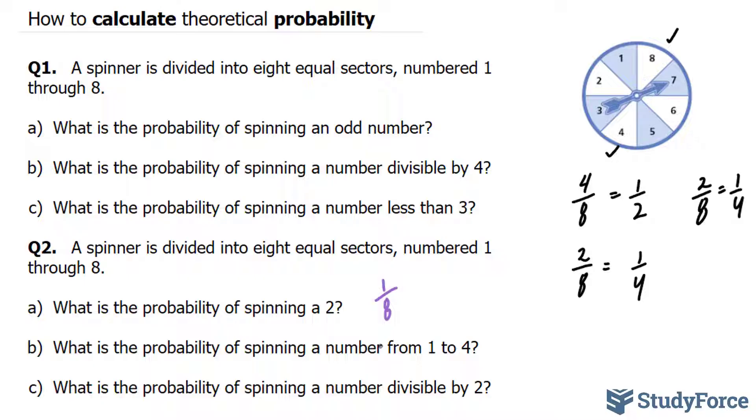What is the probability of spinning a number between one and four? One, two, three, four. There are four out of eight chances, which is equal to half.